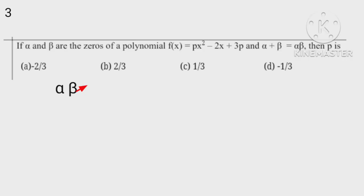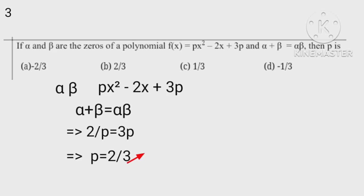Since alpha and beta are two roots of px squared plus 2x plus 3p, given alpha plus beta equals alpha beta, this implies that 2 upon p equals 3, which implies that p equals 2 thirds.